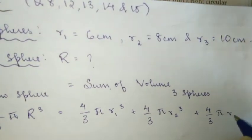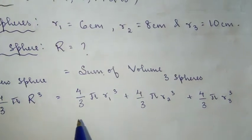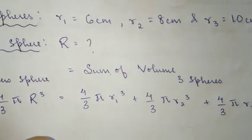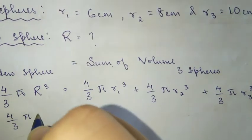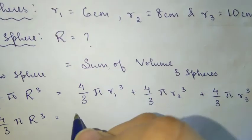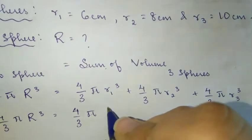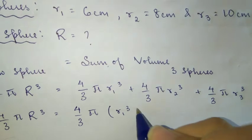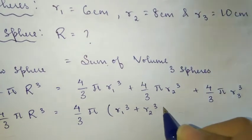Now let's take the common factors out so that we can cancel it off with the ones on the left. Four by three is common, pi is also common, r is not common because they're all different. So we have four by three pi times r one cube plus r two cube plus r three cube.